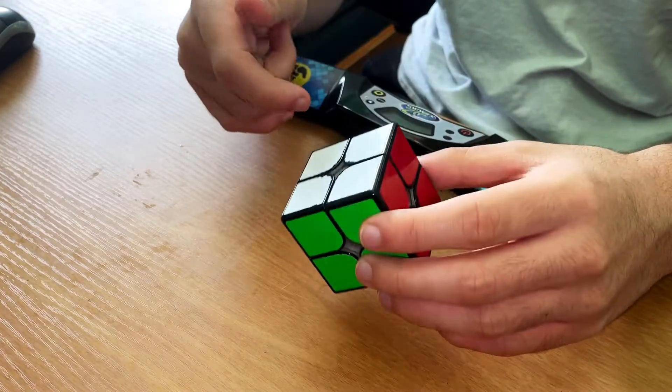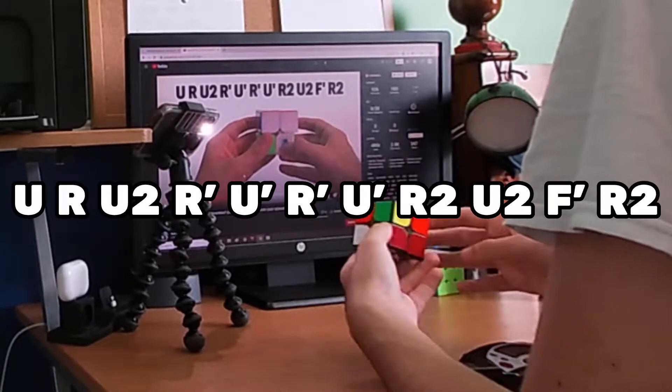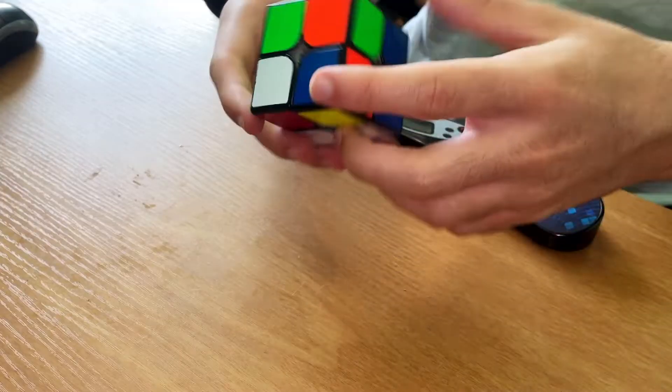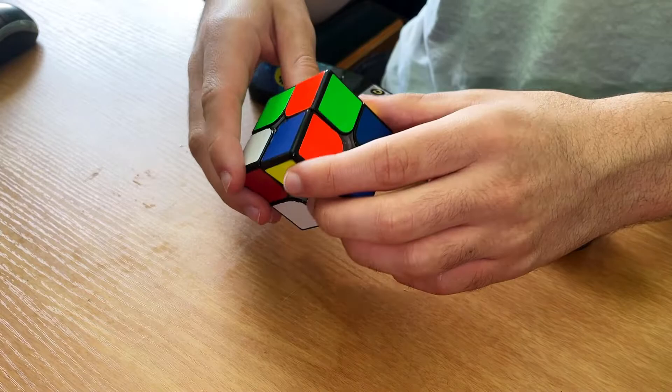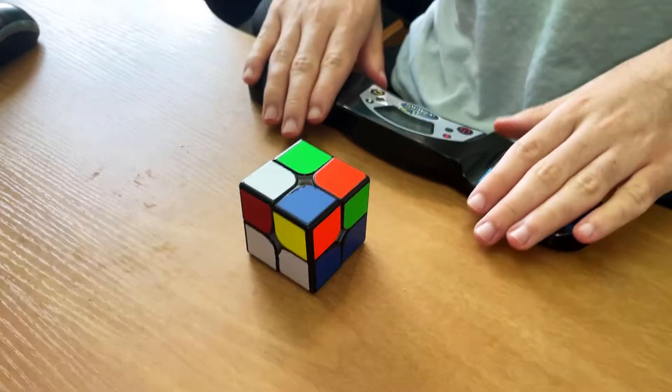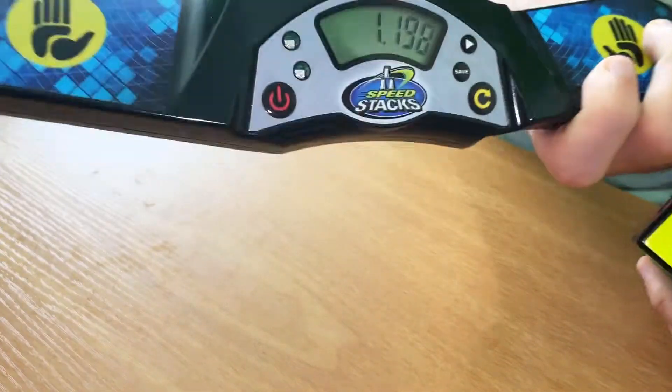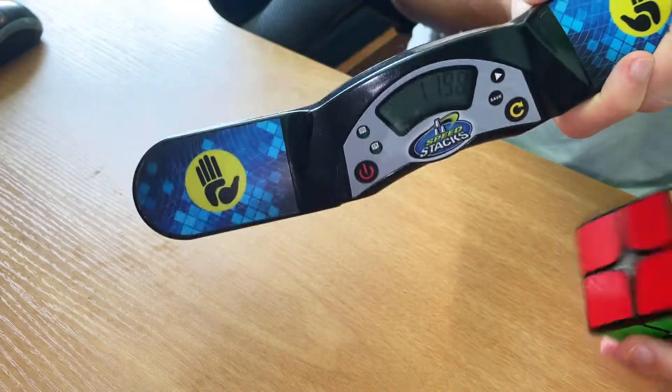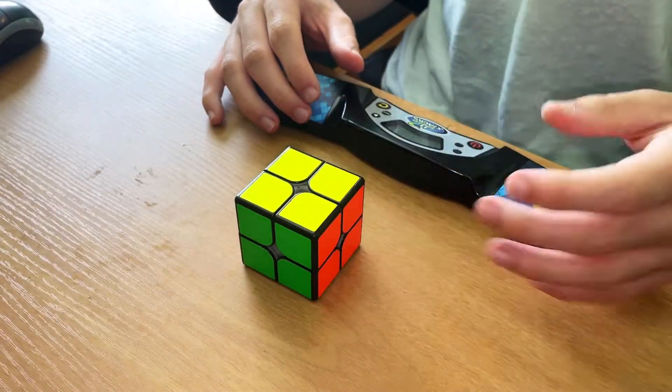This next scramble was for a 0.60 solve that happened in Poland or something. I can already see how this is going to be solved—just R2 U R prime U I think. Is that a plus two? Okay, technically it wasn't a plus two, it still wasn't a sub-one either. It was 1.198, so obviously I'm not very good at 2x2 single world record attempts.